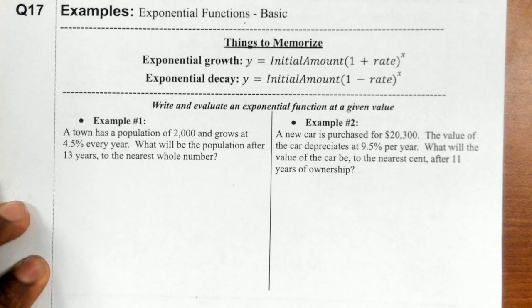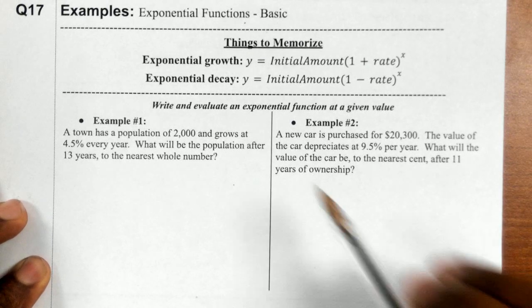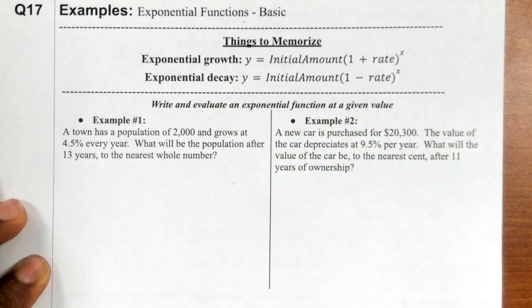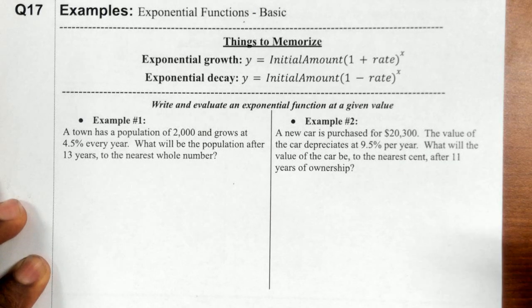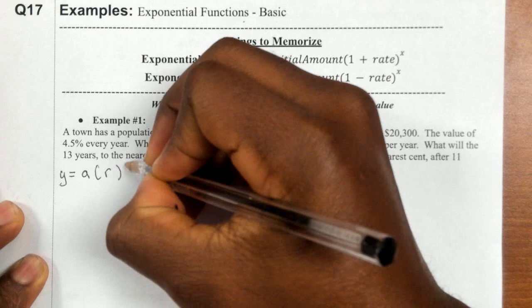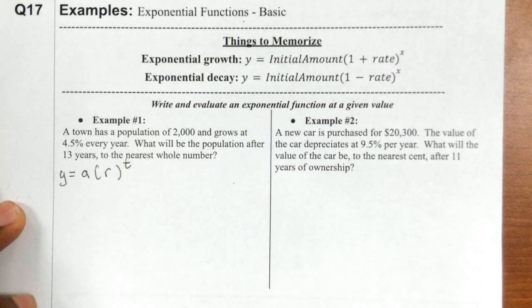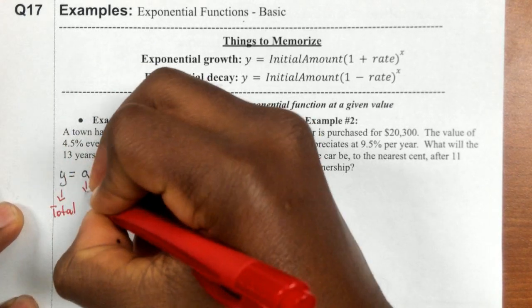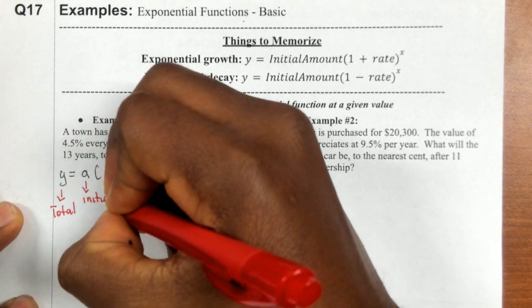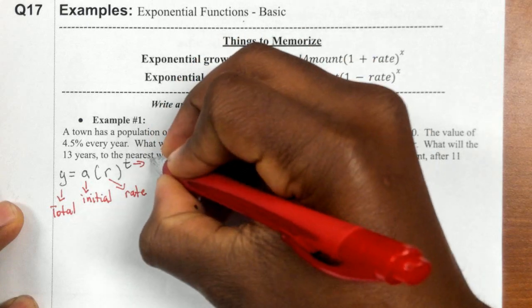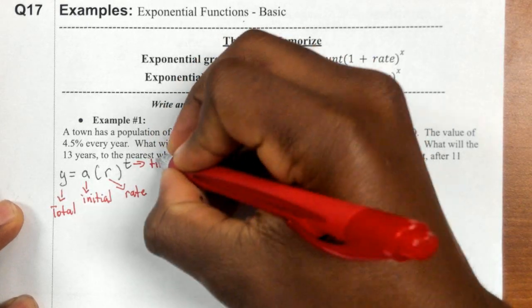An exponential function can be broken up into two types: a growth function or a decay function. The general form for all exponential functions is y = a(r)^t, where y represents your total, a represents your initial value, r represents your rate of change, and t represents time.